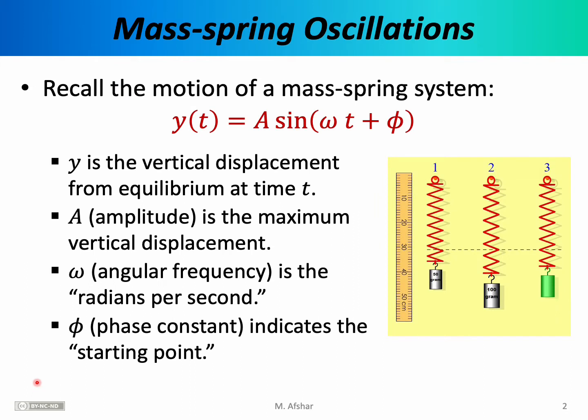In this and the next few lectures, we want to discuss waves. To understand waves, one must first understand simple harmonic motion. A primary example of simple harmonic motion has been the mass-spring system. It turns out many types of waves, like water waves or waves along a rope, can be modeled as a collection of vertical mass-spring systems oscillating together in a coordinated fashion. For that reason, we begin with a review of the mass-spring system.